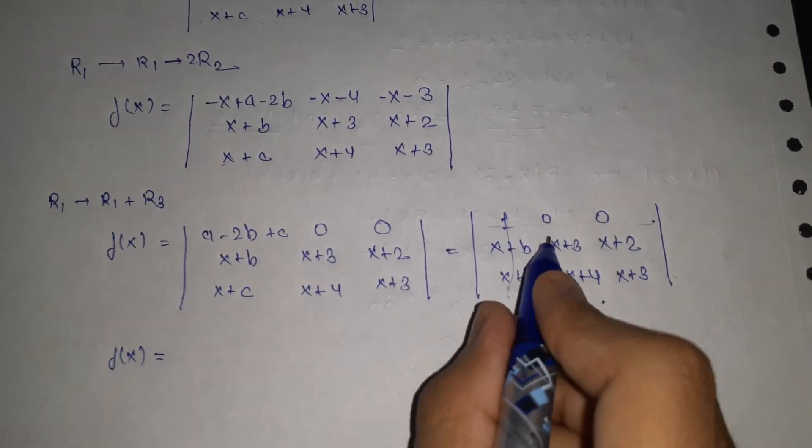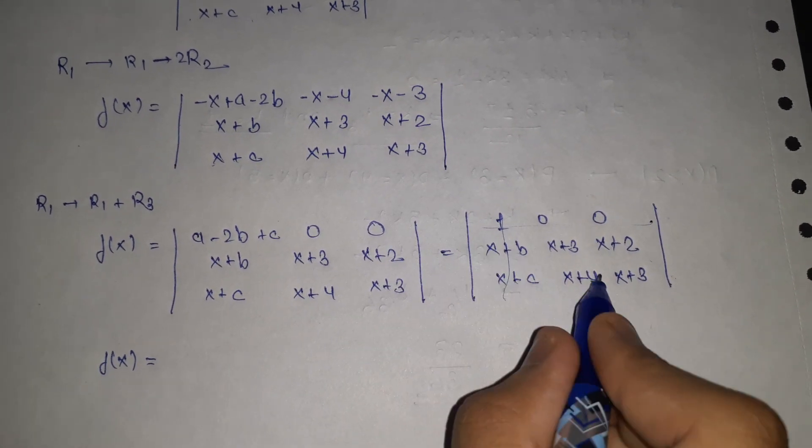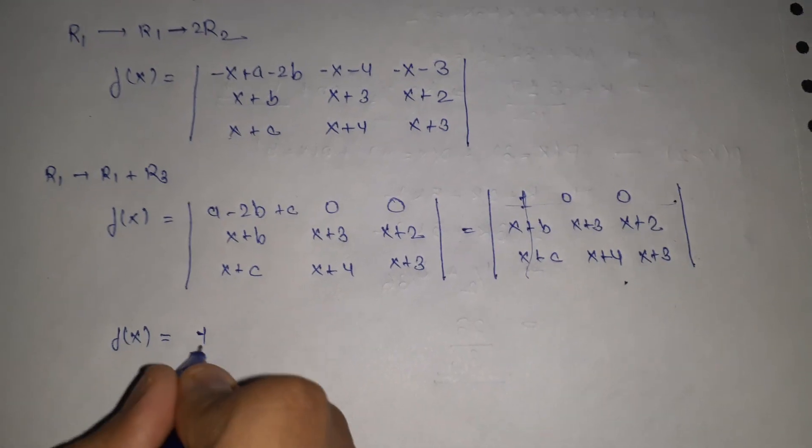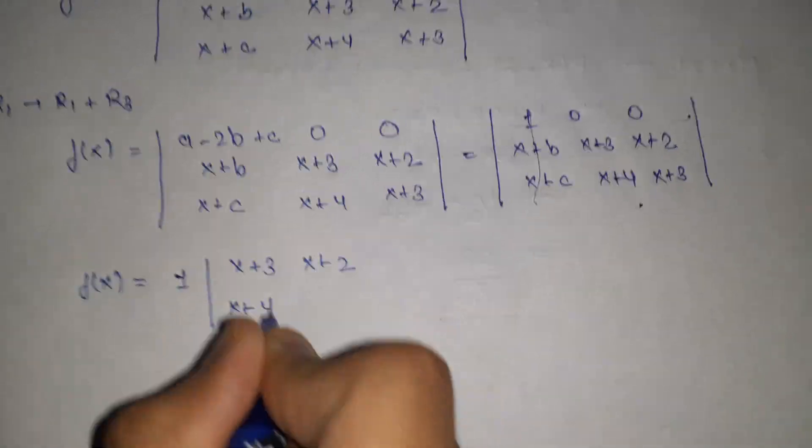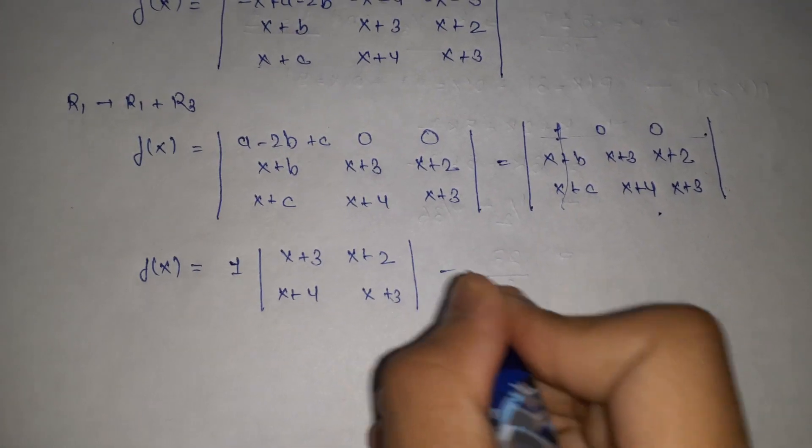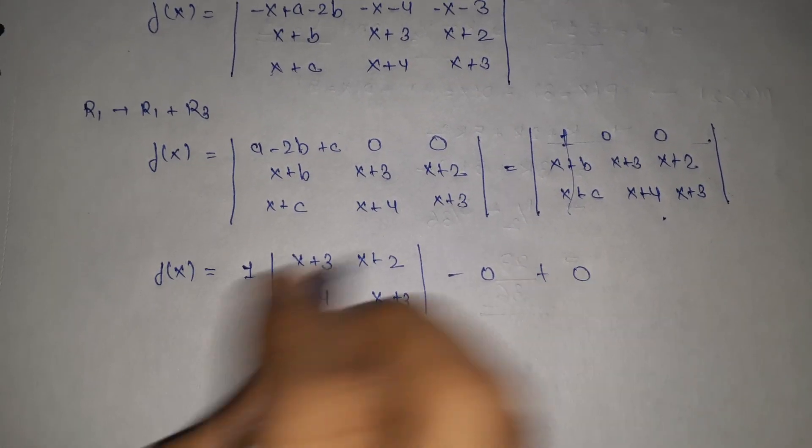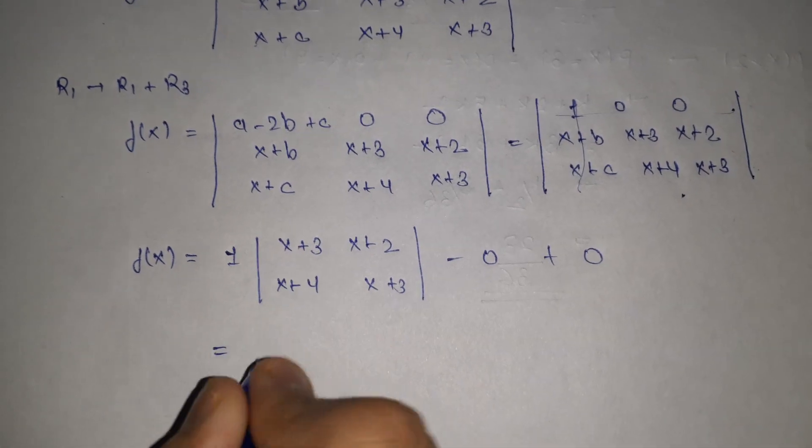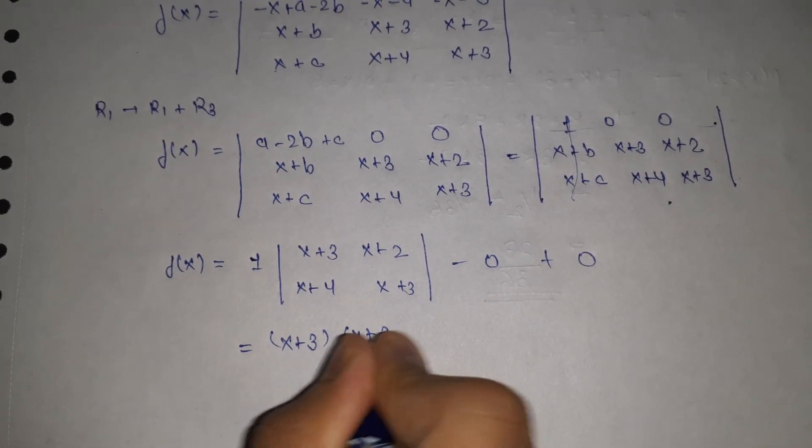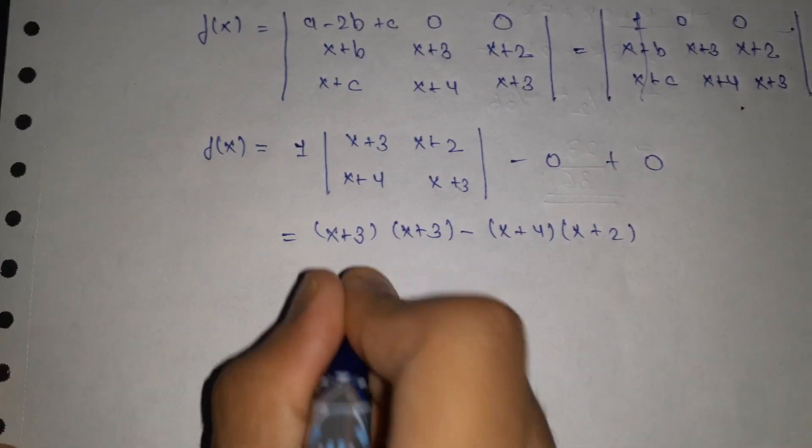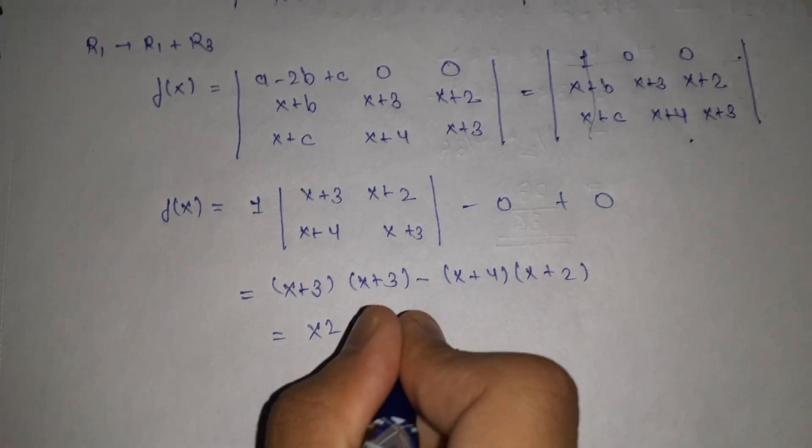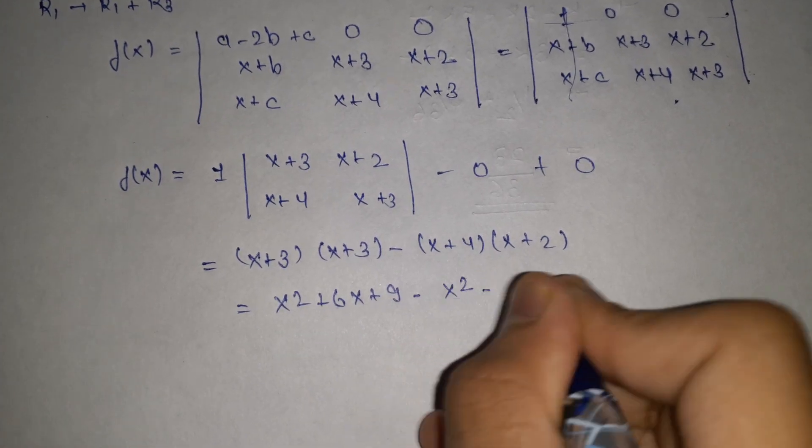So we can write f(x) by opening through this row. We get 1 into (x plus 3)(x plus 2) minus (x plus 4)(x plus 3) minus 0 plus 0. So we get (x plus 3) times (x plus 3) minus (x plus 4) times (x plus 2).